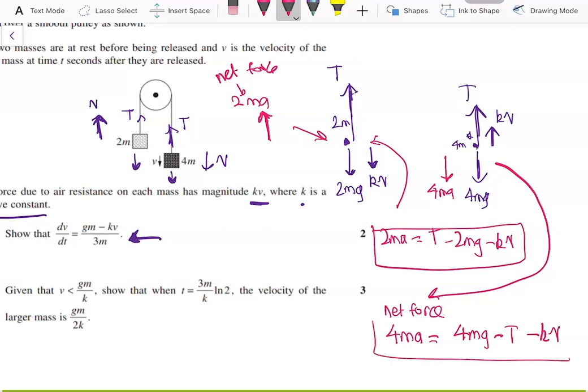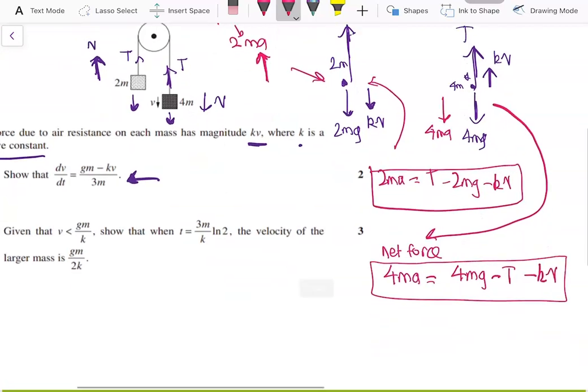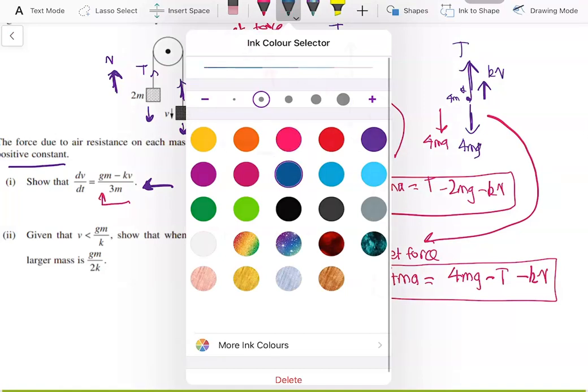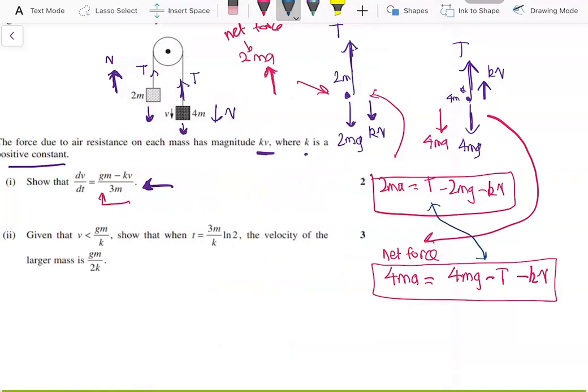Now we have two equations. And the thing we want to prove about acceleration doesn't involve T, so we want to cancel T out of the equation. And what we can do is add the two equations together to cancel out the T.